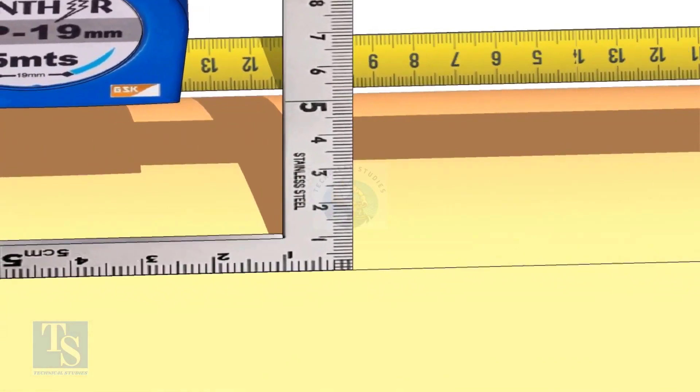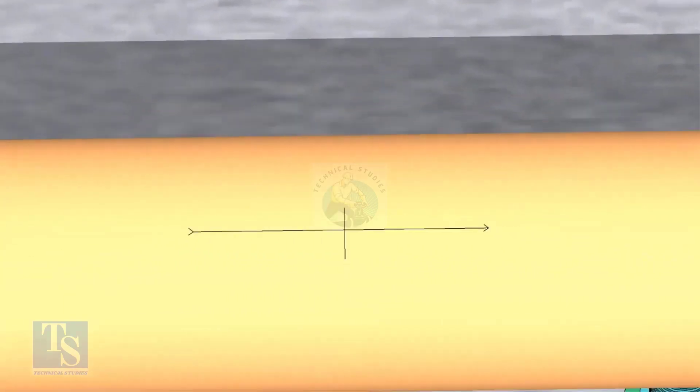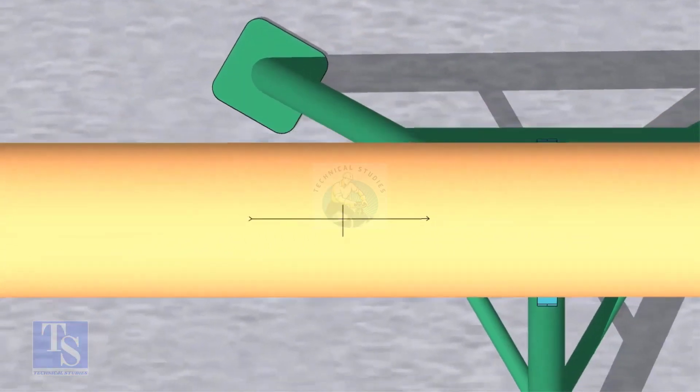Mark on the pipe where the right angle edge touches. This is the center of the OLED. Punch mark the center.